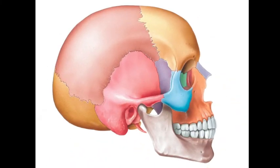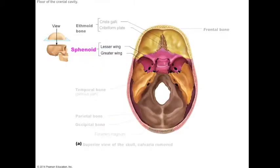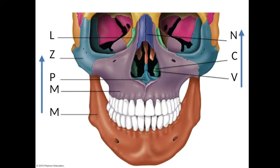The skull is the most complex bony structure in the body and consists of the cranial bones, or cranium, which enclose and protect the brain as well as provide some attachment sites for some head and neck muscles. The facial bones form the framework of the face, form cavities for your eyes and nose, provide openings for passage of air and food, and hold the teeth and anchor the muscles of the face.